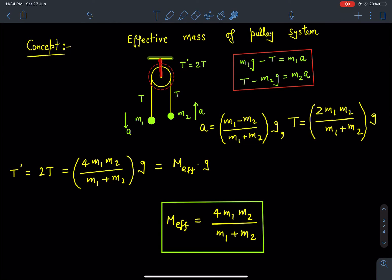The tension in the connecting string which is connecting it to the ceiling or support is going to be 2T because the pulley is massless. Corresponding to that, this tension T' we can write as m_effective·g.